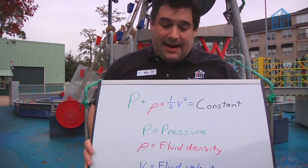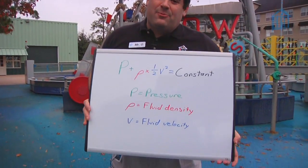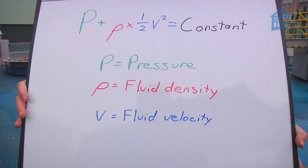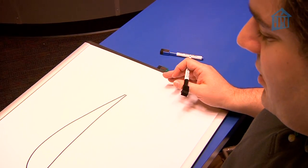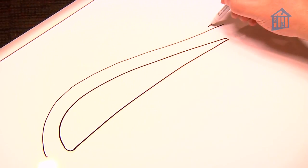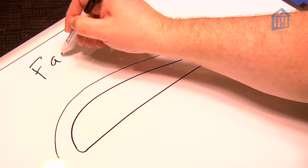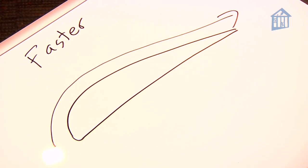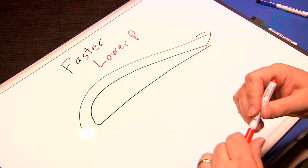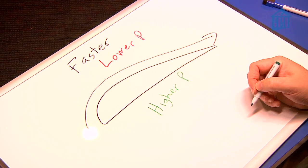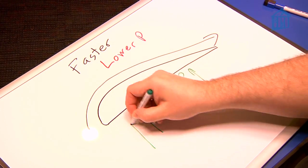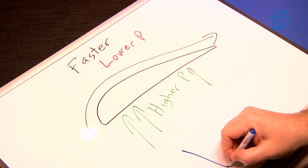Now, again, this equation might look a little complicated, but really and truly all it says is that the faster a fluid moves, the lower the pressure. So what does this have to do with lift? Well, the shape of the wing allows air to travel over the top faster than underneath. This means that the pressure on top is lower and the pressure on the bottom is higher. The higher pressure underneath pushes up on the wing, and that is lift.